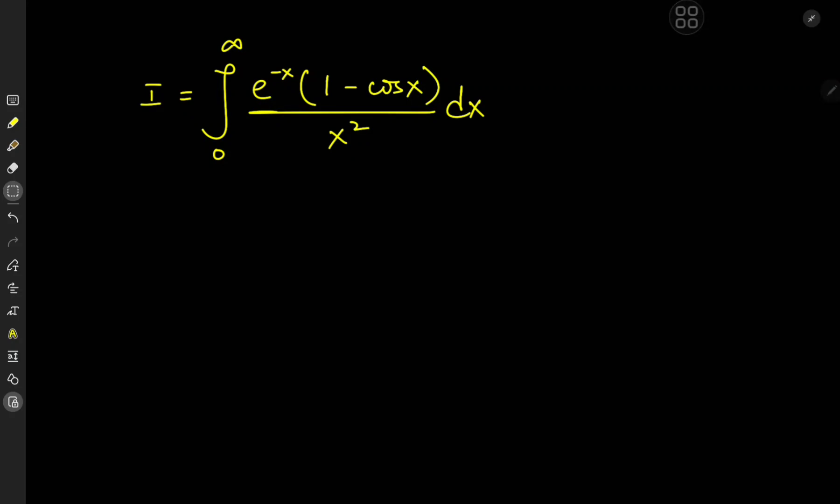Ladies and gentlemen, welcome back to the channel. This is your boy Kamal once again, and today we have a really cool integral. It's the integral from 0 to infinity of e to the negative x times 1 minus cosine x divided by x squared dx. And this looks like the perfect sort of integral to apply Feynman's trick of differentiating under the integral sign, so that's exactly the path we're going to take.